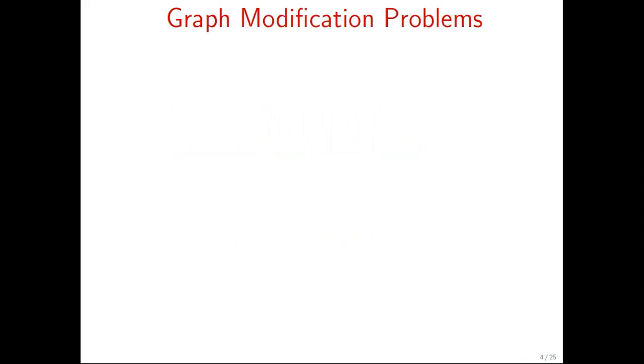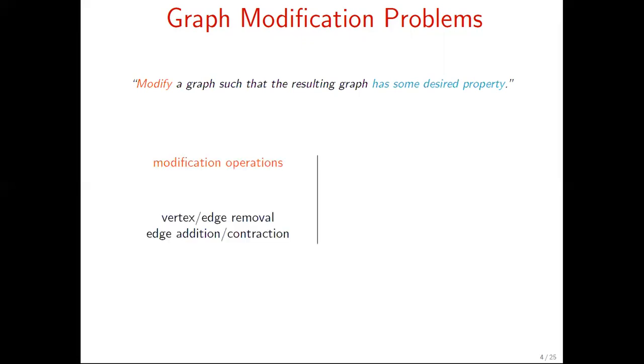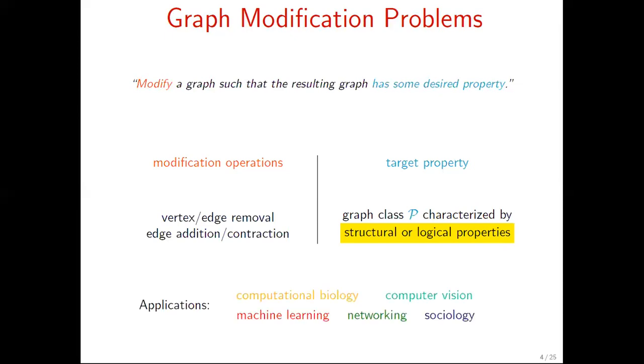The problem we study belongs to the general family of graph modification problems. A graph modification problem certifies whether we can modify a graph such that the resulting graph has some desired target property. Modification operations can be local modifications on vertices and edges, while the target property is described in terms of a graph class P, characterized by structural or logical properties. There is a plethora of algorithmic results in the literature concerning graph modification problems, and many theories and applications arise from their study.